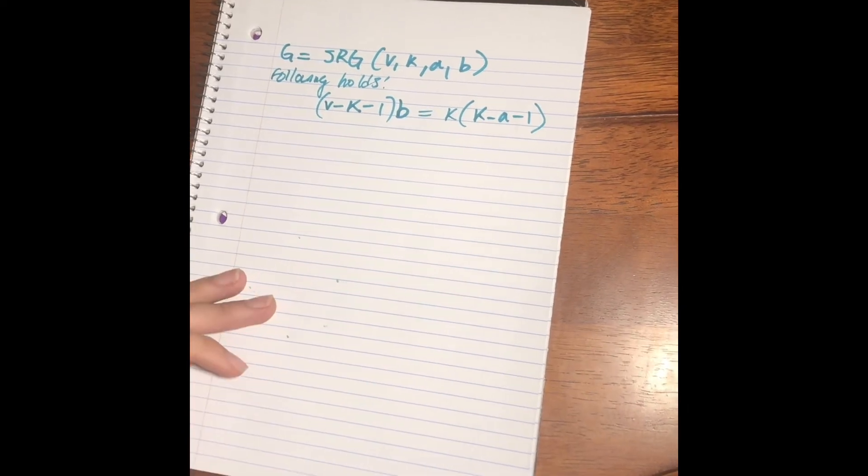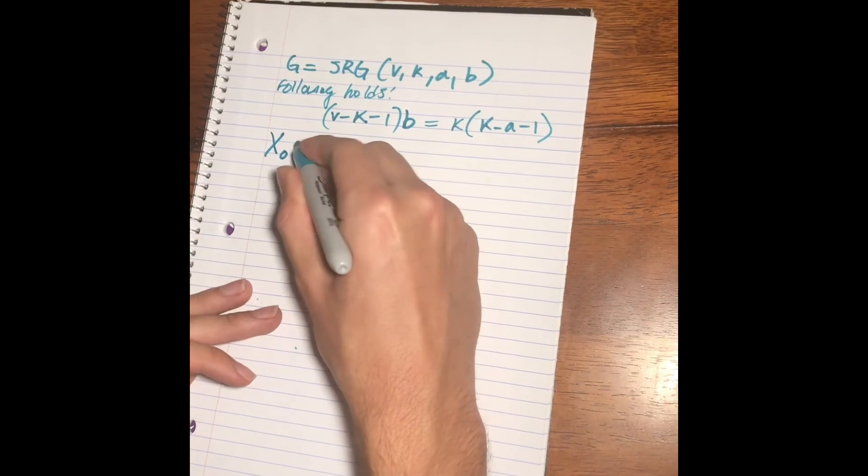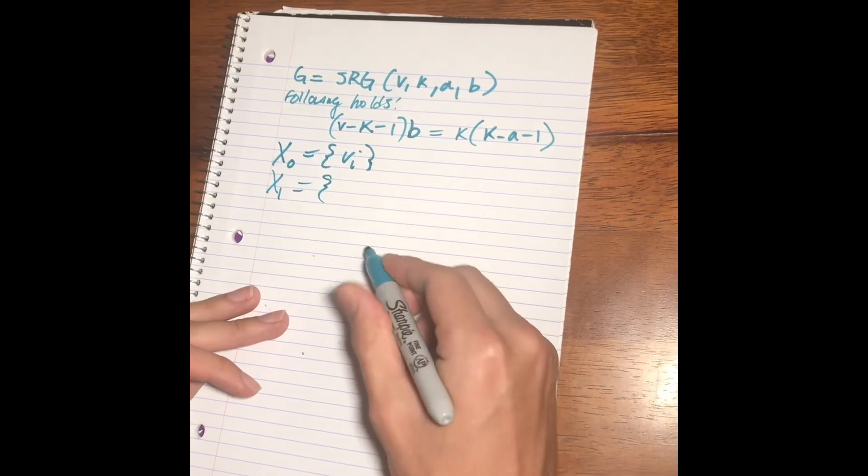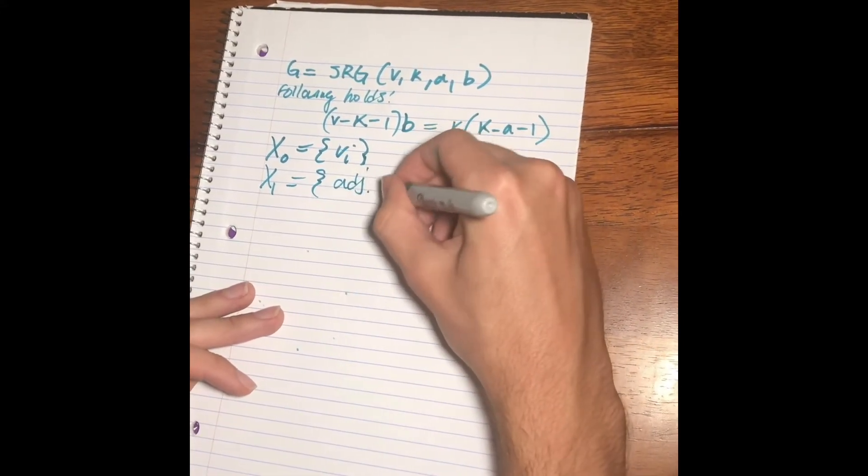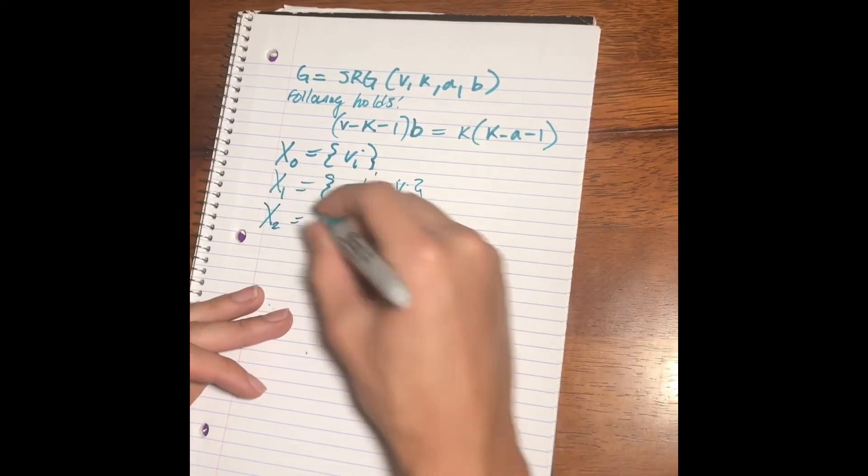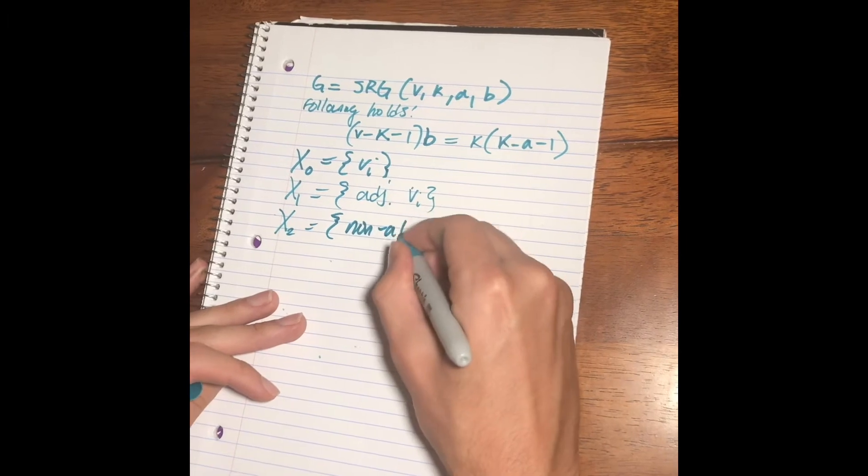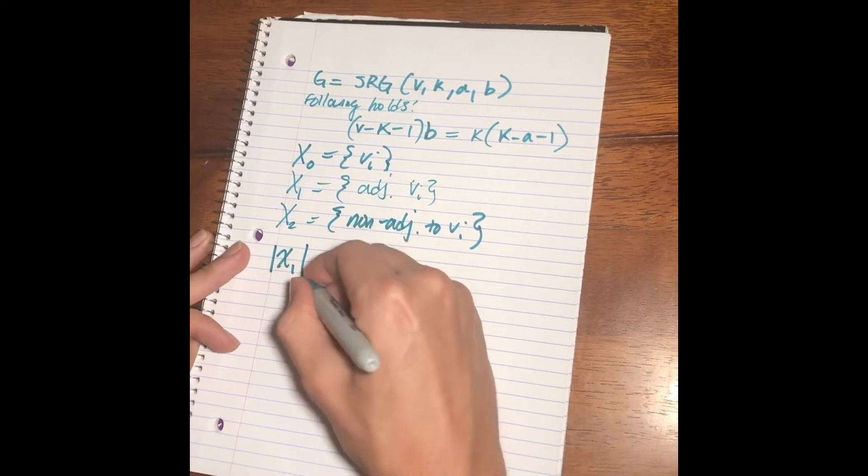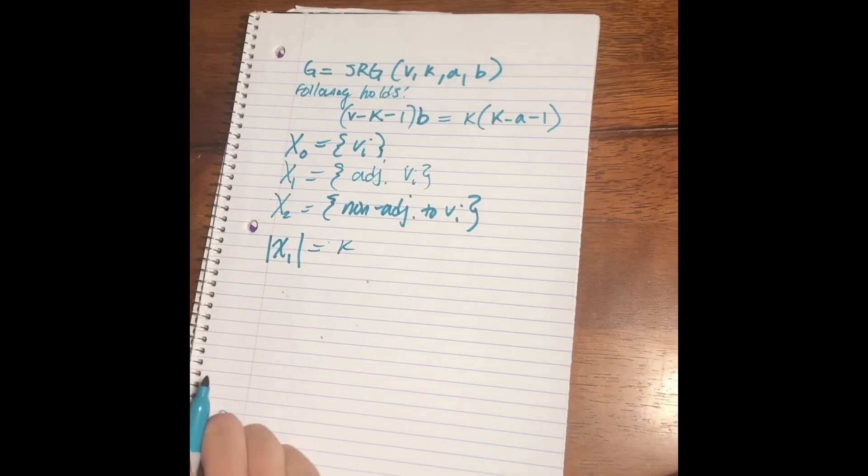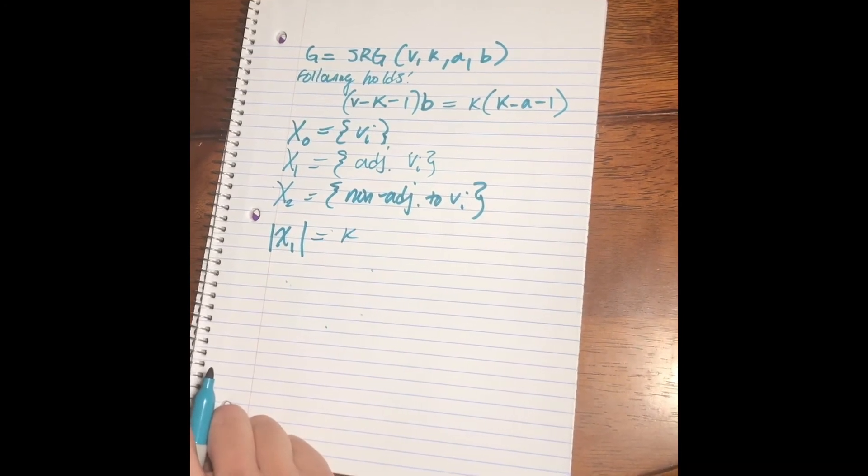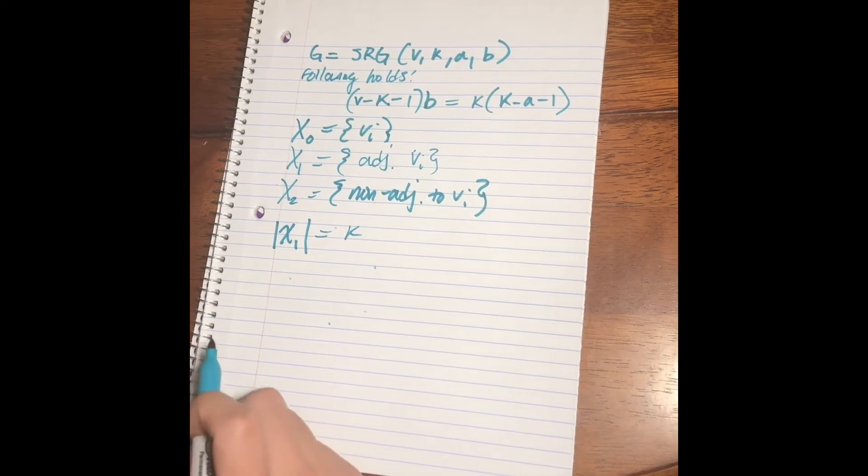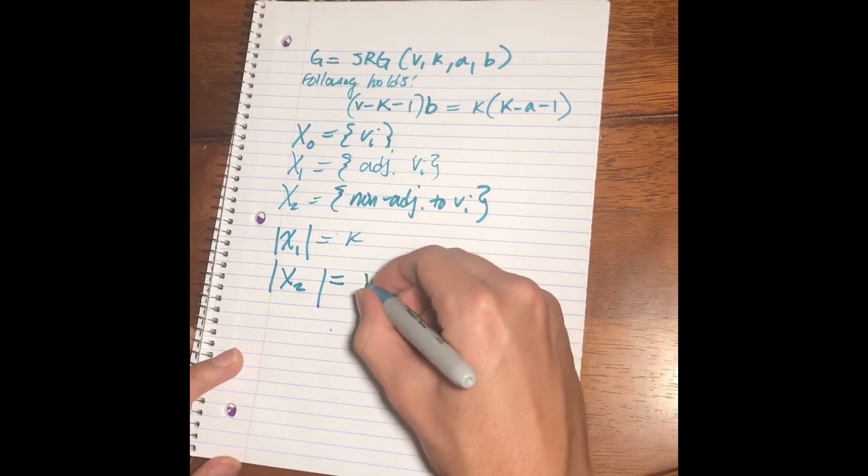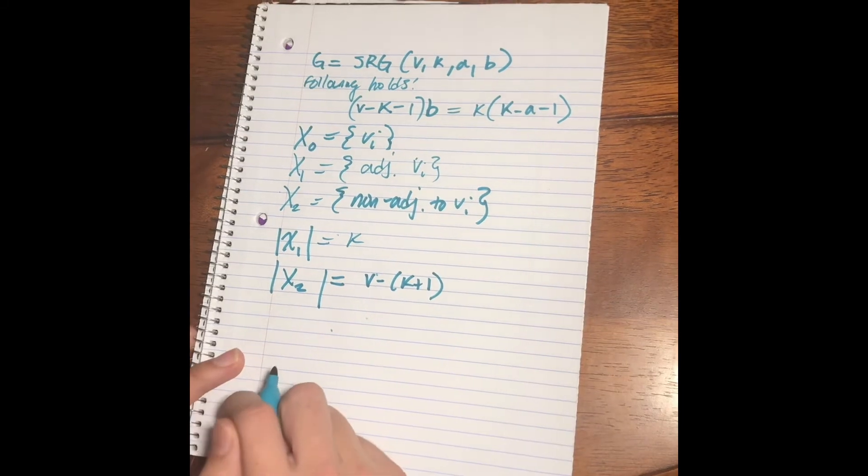So, we're going to partition g. We're going to say x0 is some arbitrary vertex vi. x1 are all the vertices adjacent to vi, and x2 are likewise the non-adjacent. Notice that the size of x1 is k since our graph is k regular. And the size of x2 is the complement v minus k minus 1, the remaining vertices of g.